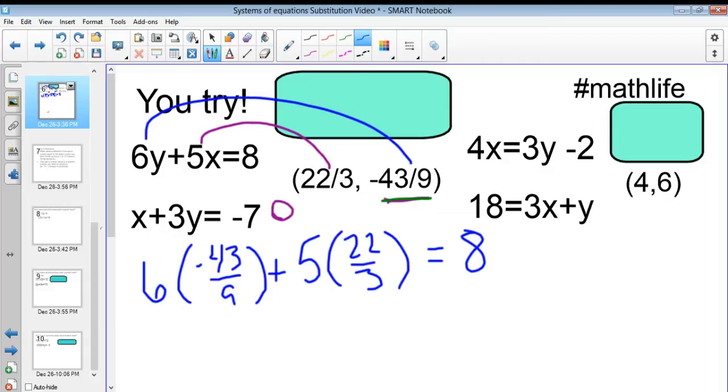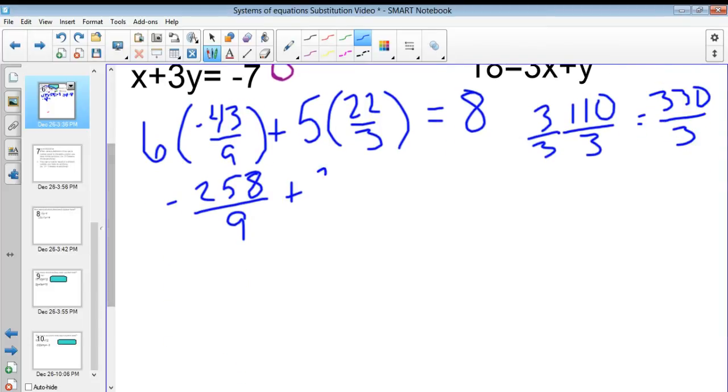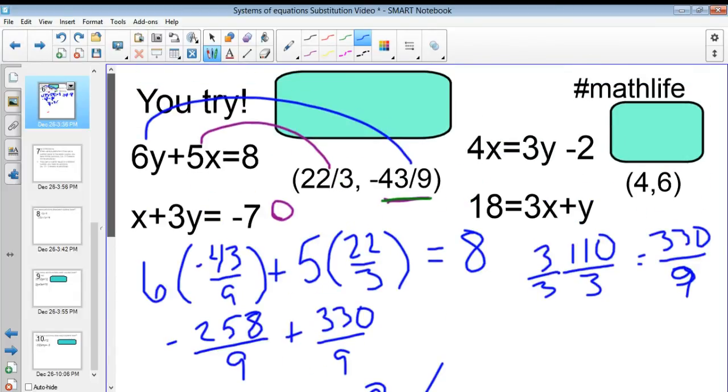And I'm going to get 43 times 6 is equal to negative 258 over 9. And I'm not going to, I'm going to leave it over 9. And you'll see why in a second. And then I'm going to add 5 times 22 over 3. And 5 times 22 over 3 is 110 over 3. And I want to get that in terms of 9. So, I'm going to multiply this by 3 over 3, which will get me 330 over 9. So, I add these two quantities together. And that will give me 72 over 9, which, of course, 72 divided by 9 is 8. So, that checks out.